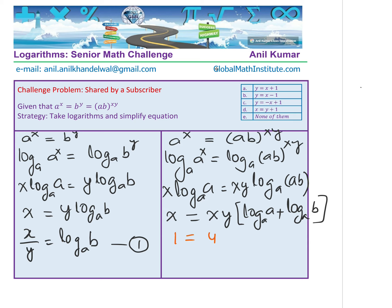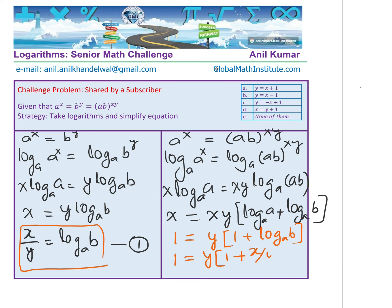We can cancel x from both sides. So we get 1 equals y times the quantity log base a of a plus log base a of b, where log base a of a is 1. Now substituting x over y for log base a of b from equation 1, we get 1 equals y times the quantity 1 plus x over y. Opening the bracket, we get 1 equals y plus x. So we conclude that 1 equals x plus y, which means y equals negative x plus 1, and that gives option C as the right answer.